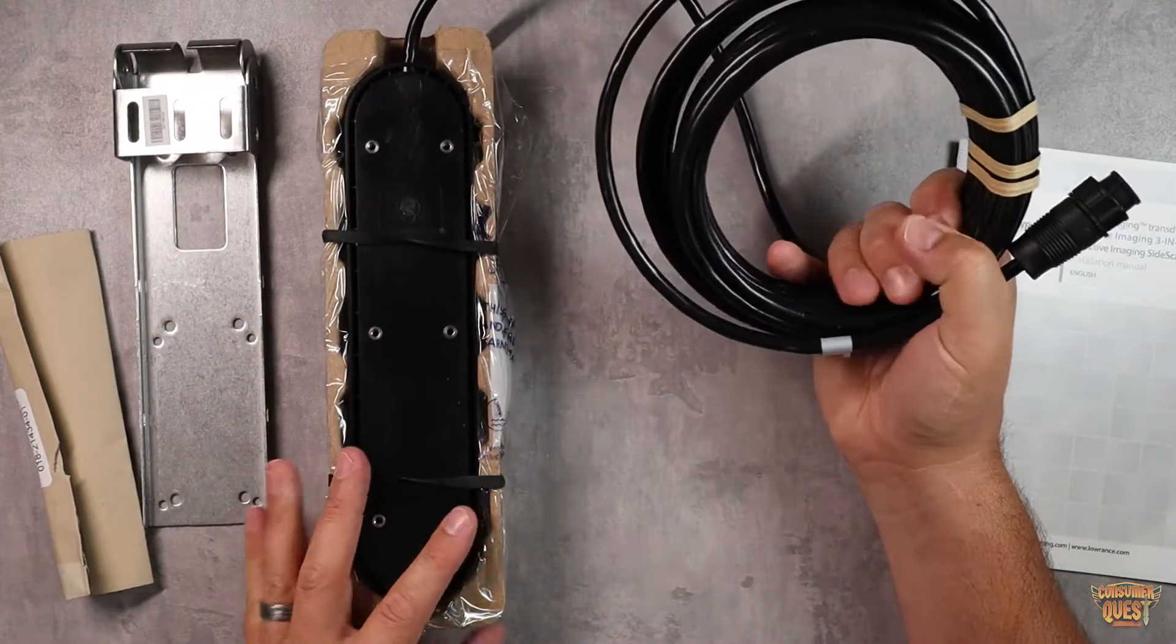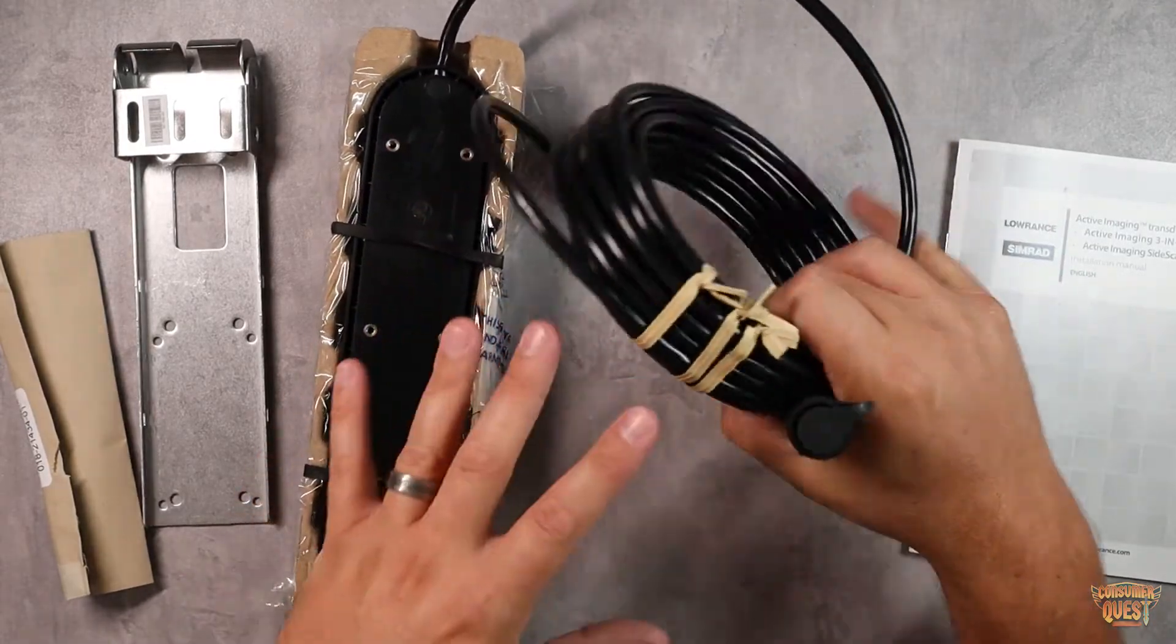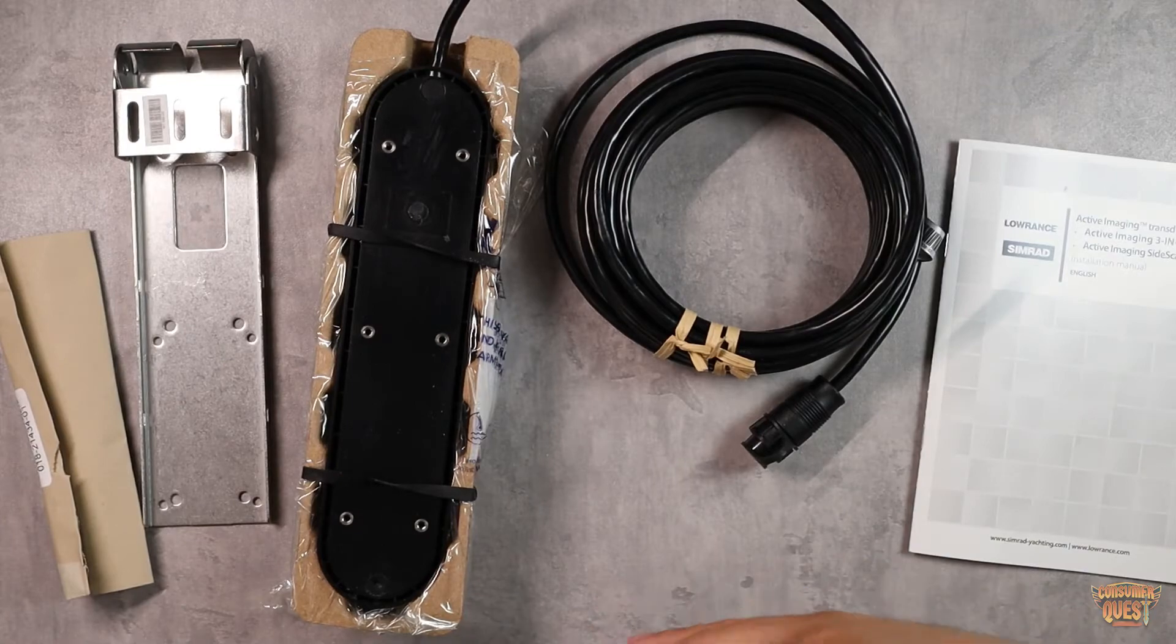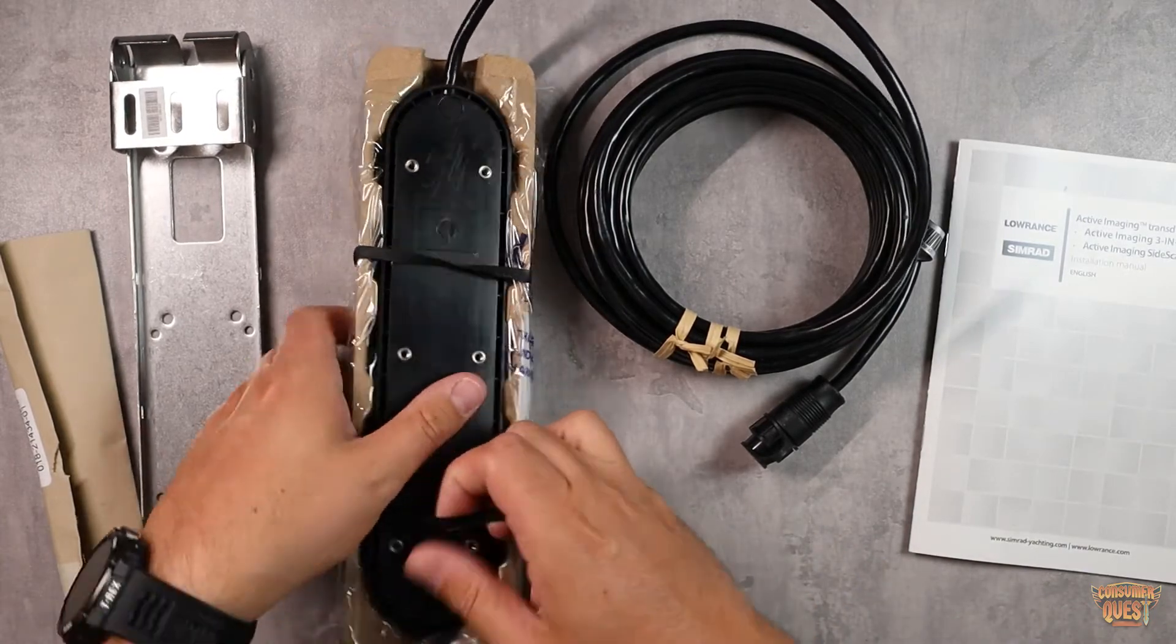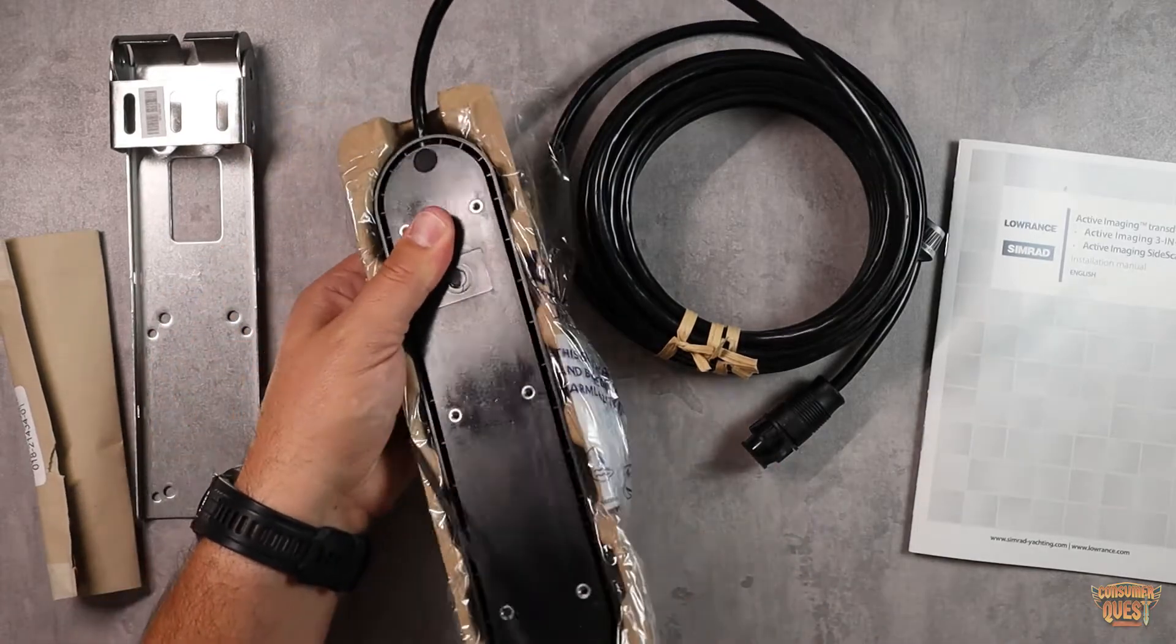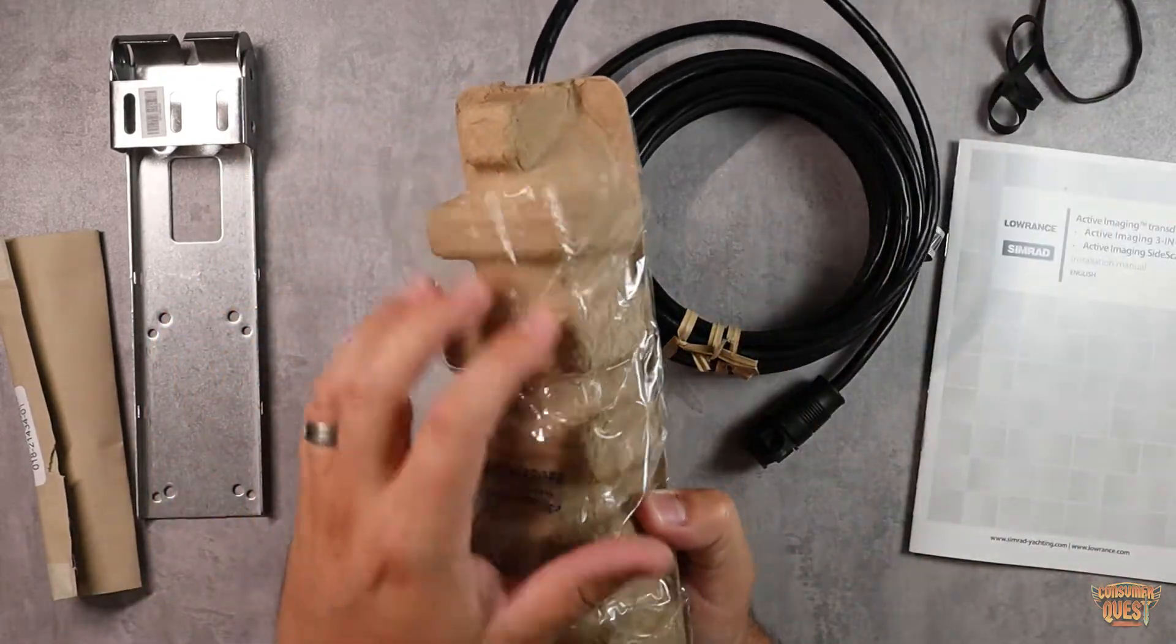Then you've got the cable, which is going to be a super long cable. This is going to allow you to hook this, wherever you mount your transducer back up into your fish finding unit. Now, the other thing I do want to mention before I get too far ahead of myself here, as I'm pulling this packaging apart, you're going to see this really crinkly bag.